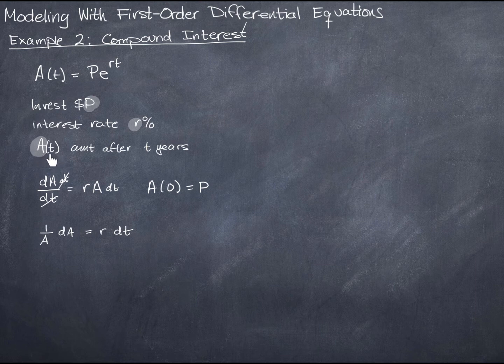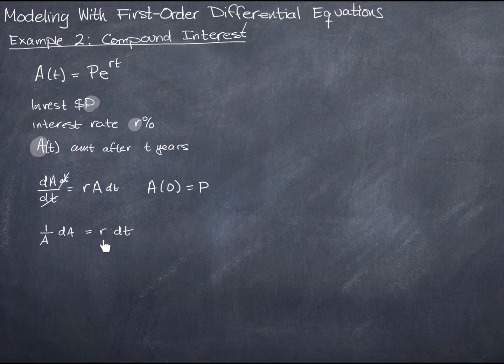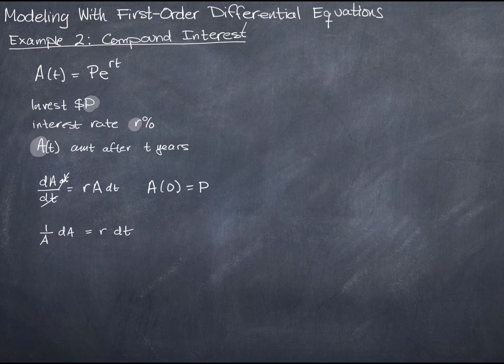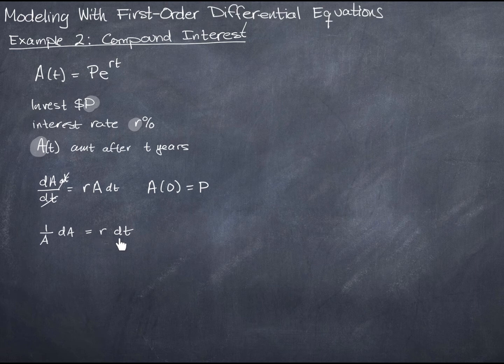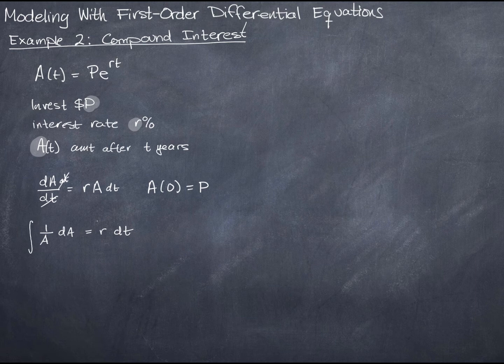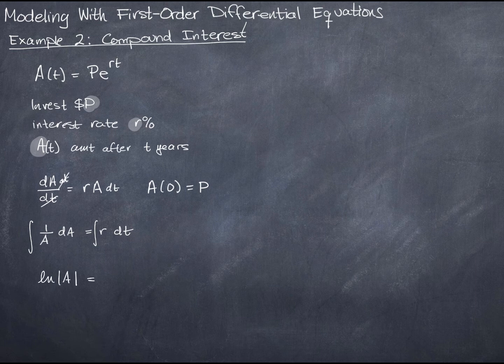It's an amount after time t. So this is going to be a function of t. A is a function of t. r is just a constant. It's the rate that would be given in any particular instance, any particular situation. So r is a constant. So when I integrate it with respect to t, it's just going to be rt. Let's go ahead and set that up. The integral of both sides, I get the natural log of A equals rt plus c.